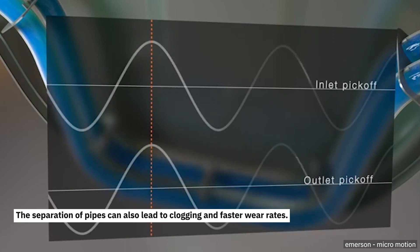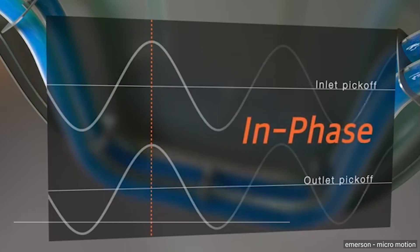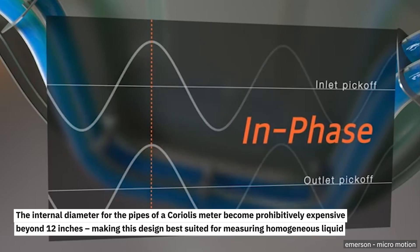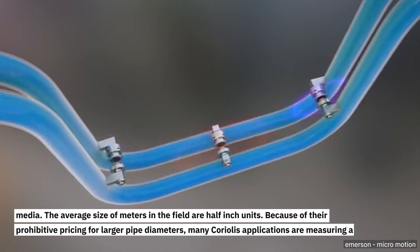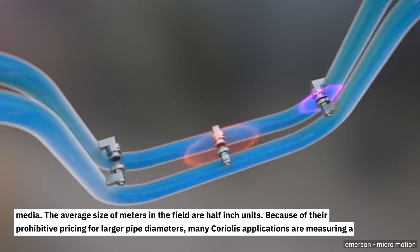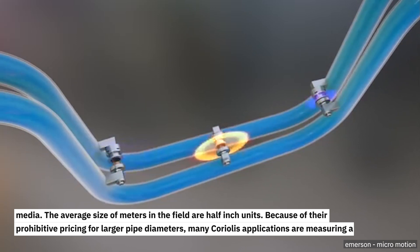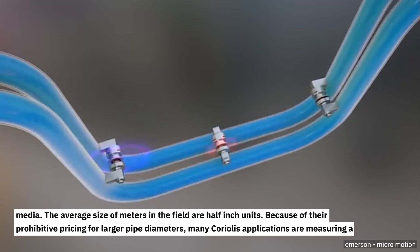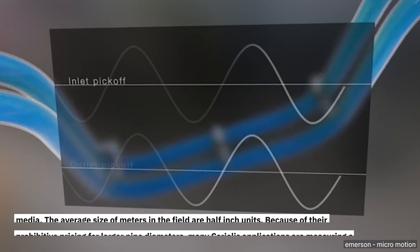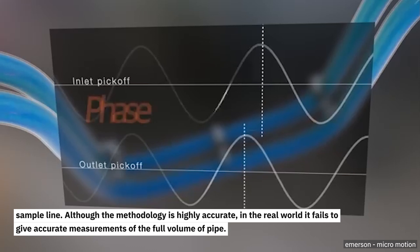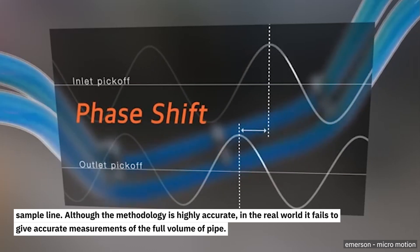The separation of pipes can also lead to clogging and faster wear rates. The internal diameter for the pipes of a Coriolis meter becomes prohibitively expensive beyond 12 inches, making this design best suited for measuring homogeneous liquid media. The average size of meters in the field are half-inch units because of their prohibitive pricing for larger pipe diameters. Many Coriolis applications are measuring a sample line. Although the methodology is highly accurate, in the real world it fails to give accurate measurements of a full volume of pipe.